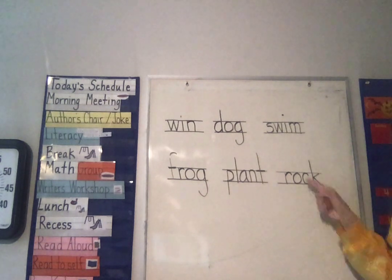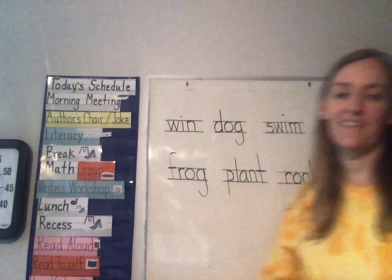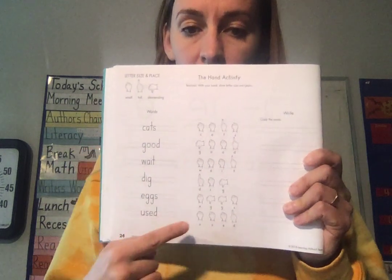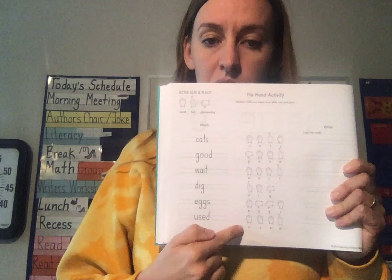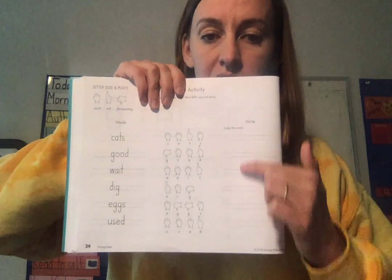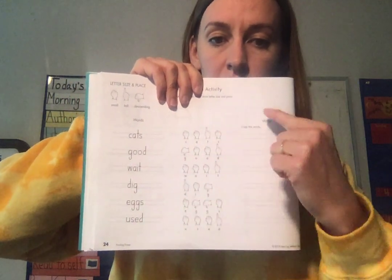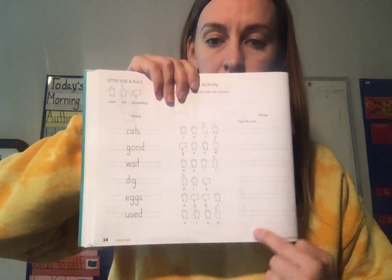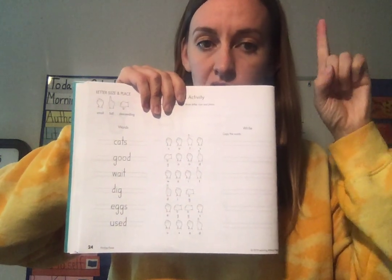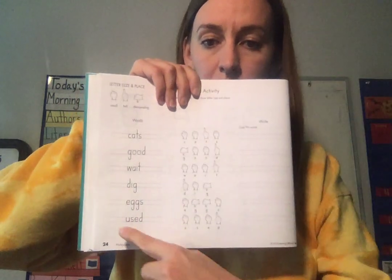Because that K goes all the way up to the top. You're going to practice this in your book on page 24. Page 24 gives you some words down the side. I want you to read the word and use your hands to show each letter whether it's tall, small, or descending. Then you'll practice writing that same word on this side.